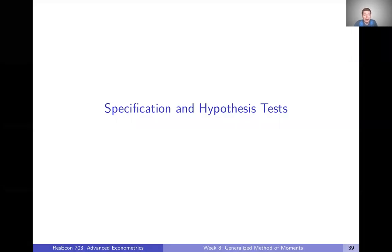Now that we have our optimal GMM estimator — which is the thing we pretty much always want to find when using GMM, because it's always great to have the most efficient estimator we can — once we have that, we might want to do some specification tests to check that our model is correctly specified, or do some hypothesis tests about those parameters.